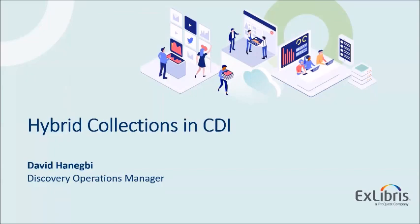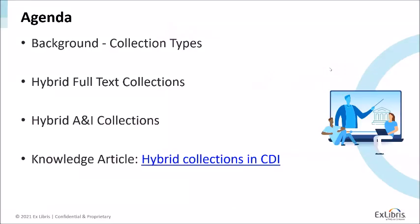In today's session, we will cover a new subject, something that is new to CDI — the hybrid collections. We will start with some background on the collection types, and then explain the two new collection types we are introducing: the hybrid full-text collection and the hybrid ANI abstracted indexes collection. We also published yesterday a new article, 'Hybrid Collections in CDI.' I believe Scott will put the link in the chat. This article covers everything we're going to discuss today and a bit more. I recommend you return to this article and ask if there are any questions.